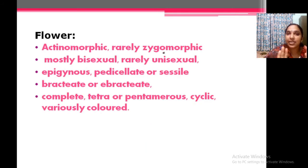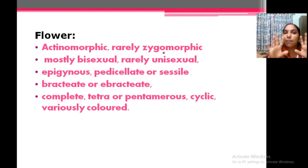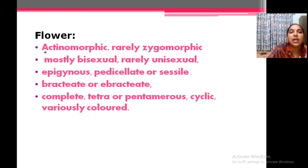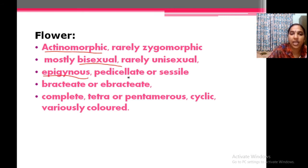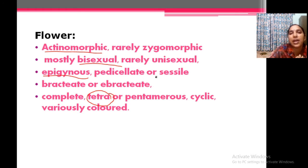Flowers are actinomorphic — when you cut at any plane you get two equal halves. Rarely they are zygomorphic. Bisexual flowers, or unisexual in one or two plants only. Epigynous — these are the typical features of the family. Bisexual and epigynous, meaning inferior ovary, is a very important point. Bractate and ebractate sometimes. Usually tetramerous condition — four parts in a multiple scale.